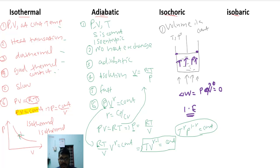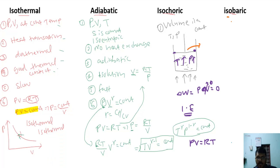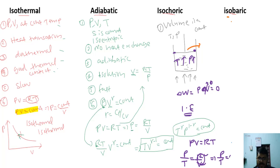For the equation of state of an isochoric process, starting from PV = RT, since volume is constant, we can write P/T = R/V. Since R is a universal gas constant and V is constant, the right-hand side is constant. Therefore P/T = constant is the equation of state for an isochoric process.